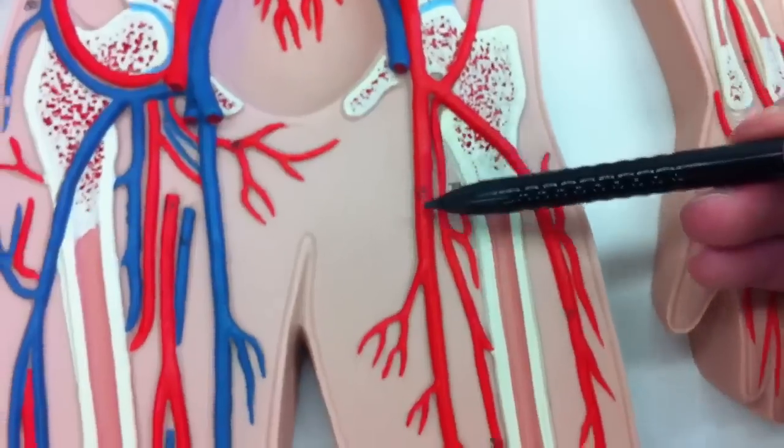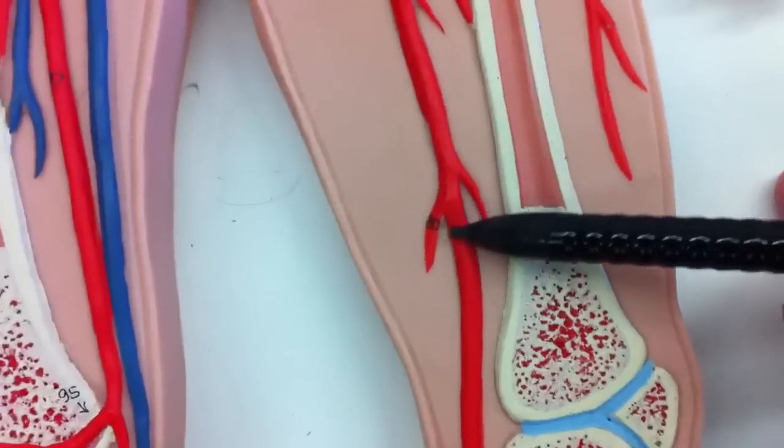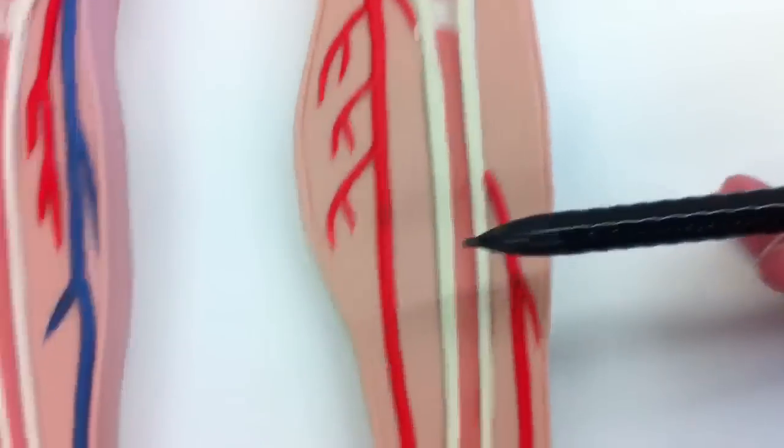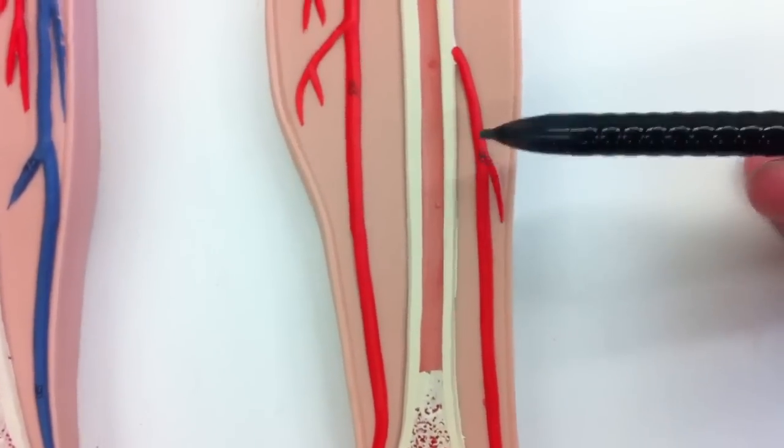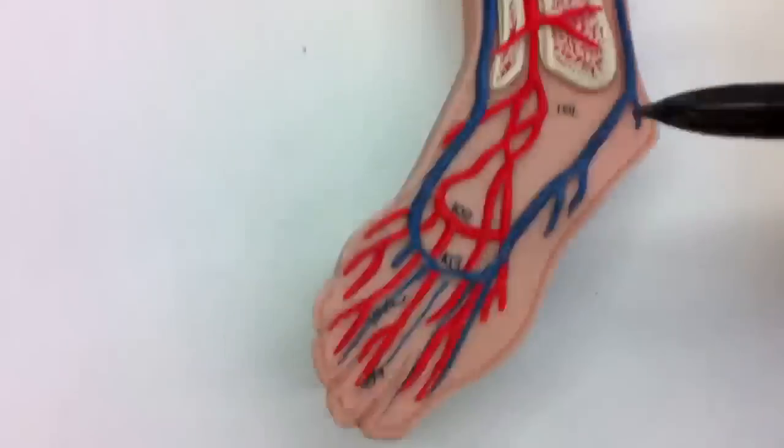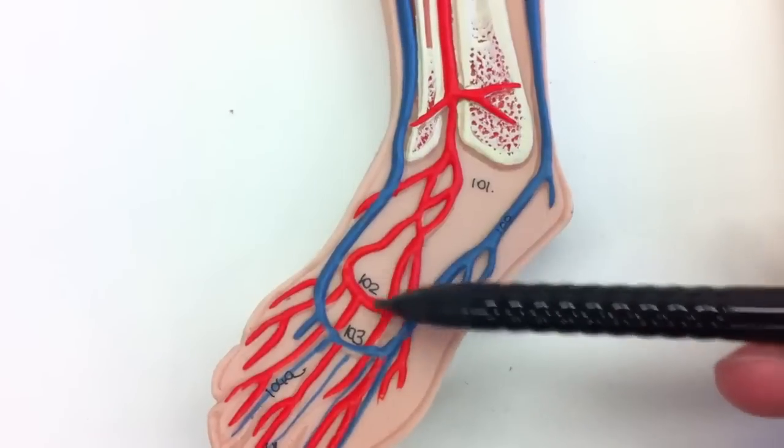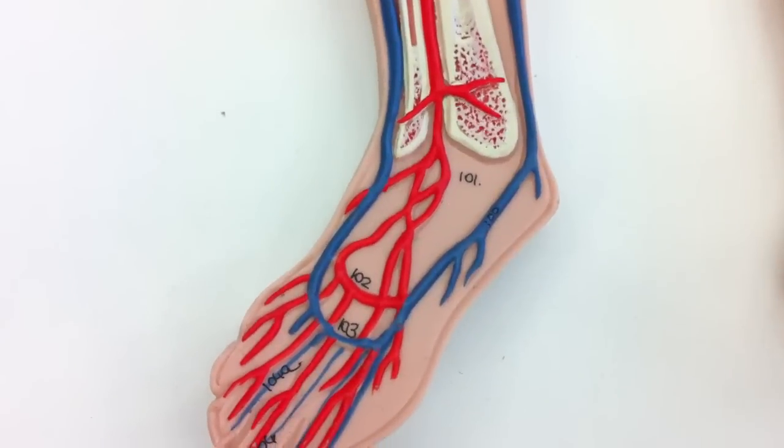So the femoral artery will come down this way. This will be the popliteal right here. And then the anterior tibialis artery and the posterior tibialis. Down here we have the dorsalis pedis artery and then the arcuate artery down here.